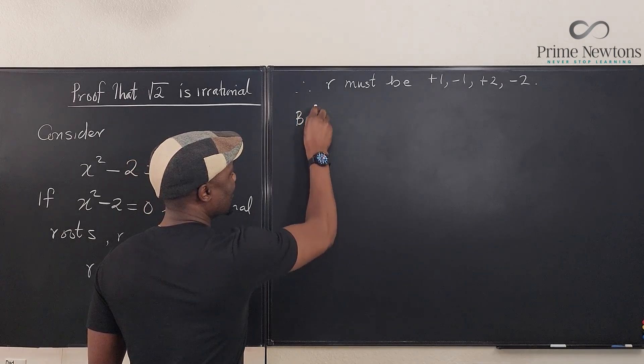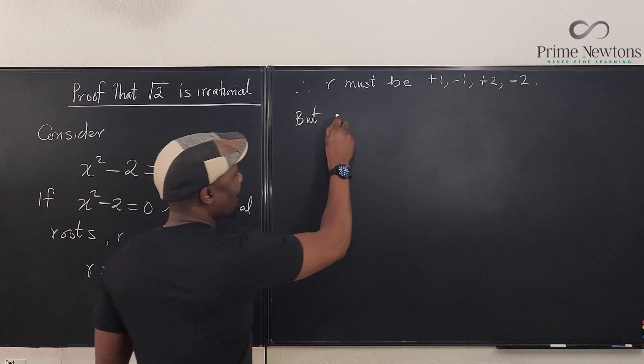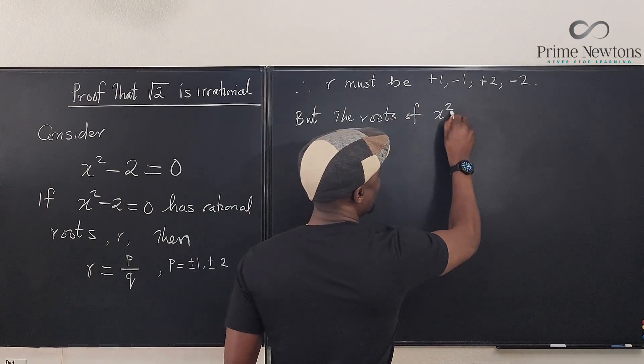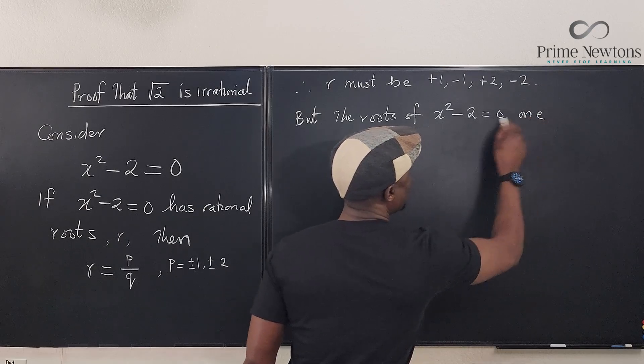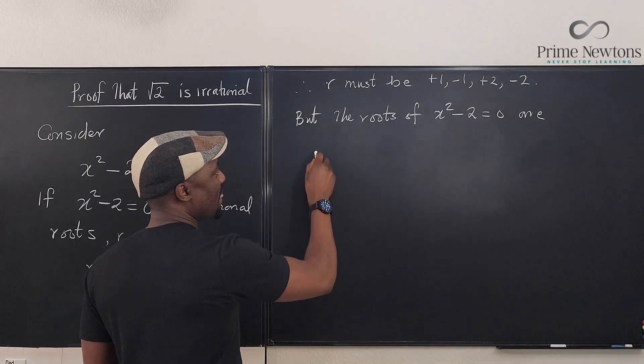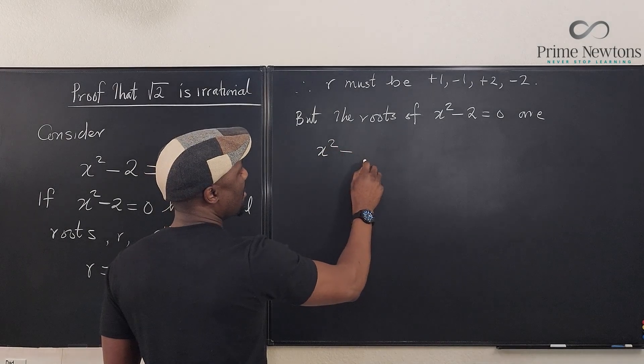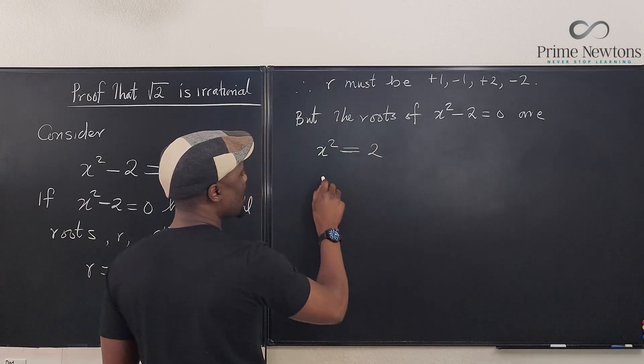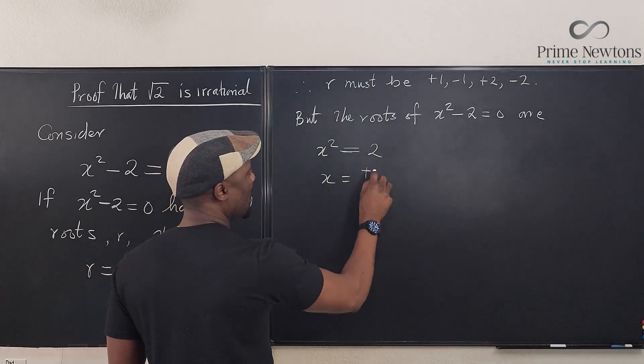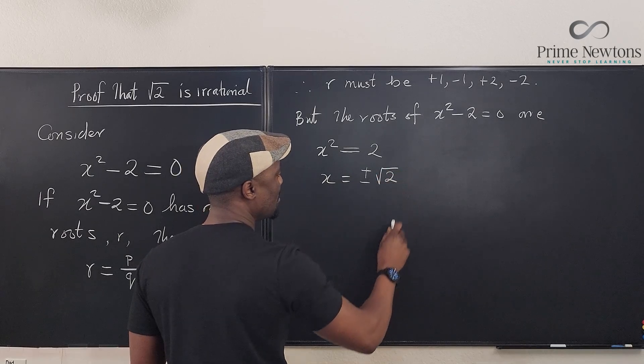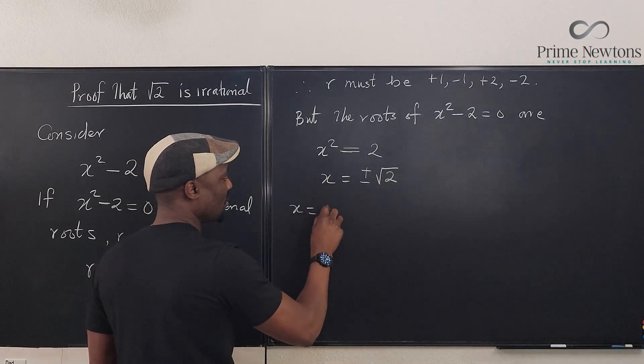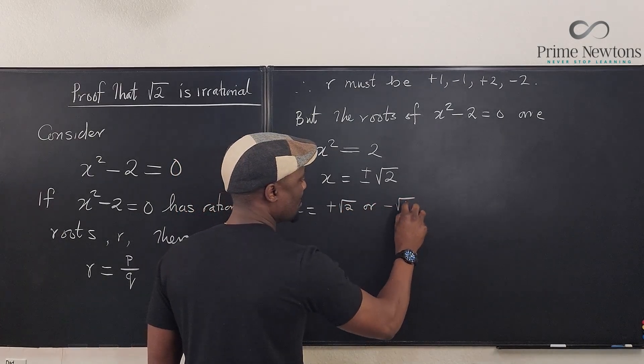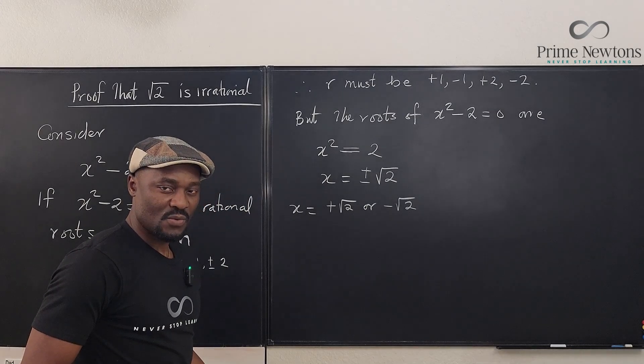However, the roots of x² - 2 = 0 are, if you solve this, you get x² = 2, so that x will be equal to plus or minus the square root of 2. So it means x equals plus square root of 2, or minus square root of 2.